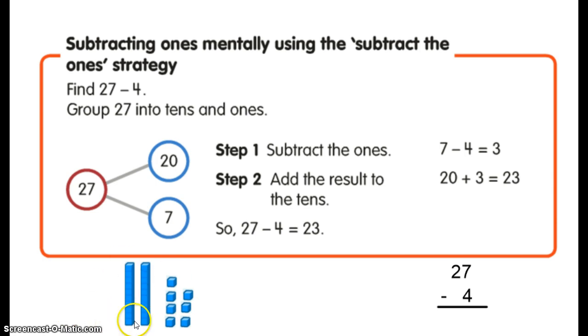And when we use these place value blocks, this representing the number 27, when I take away 4 here in just a second, I think you'll see where all these numbers come from. So when we do 27 take away 4, I'm going to split the 27 into my tens and ones, and you'll hopefully have noticed that this is a really common strategy in mental math. I'm separating my 27 into 20 and 7.